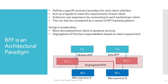The third approach — backend for frontend — is an architectural paradigm that defines a specific business boundary for each client interface. For each client interface, you design one BFF component that defines a specific boundary for that particular client channel. It acts as a facet or broker to connect to the backend service based on client requirements, enhancing user experience by connecting to each backend per client. This is essentially an enhanced, more decoupled version of the API gateway pattern.